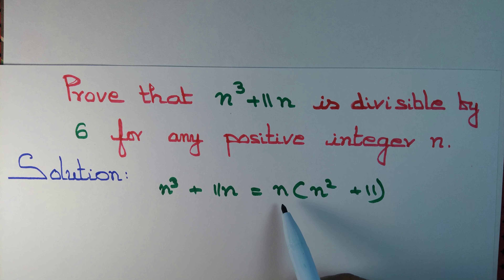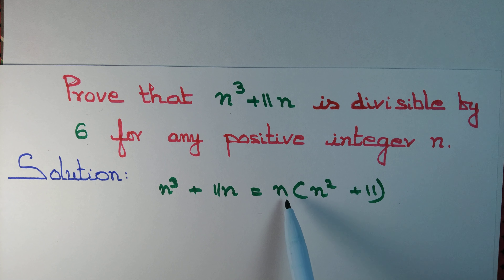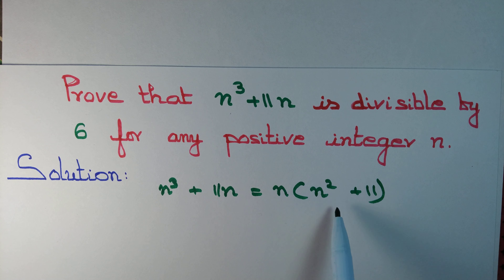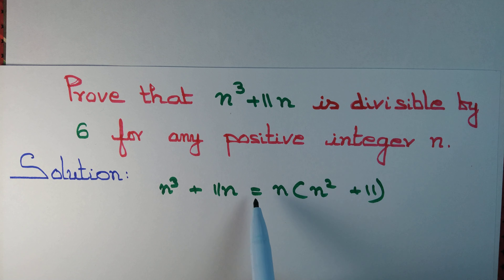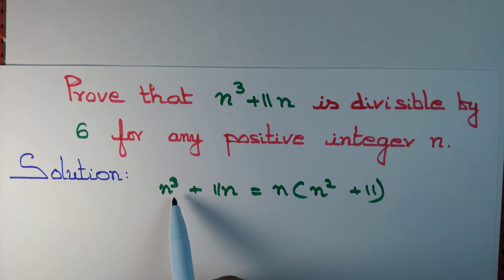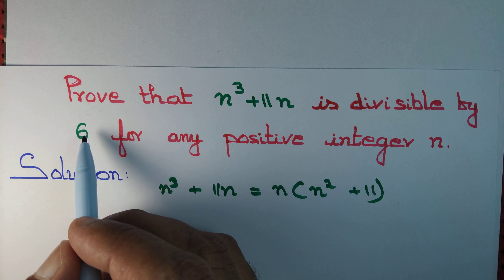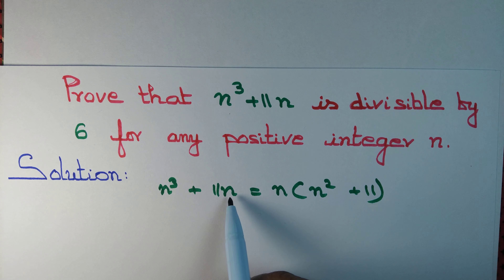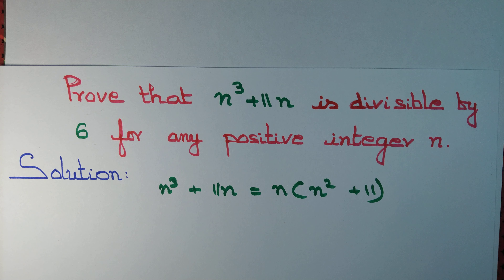If n is even, then this quantity is even. If n is a multiple of 3, then this quantity is again a multiple of 3. So it is a multiple of both 2 and 3 if n is a multiple of both 2 and 3 — meaning n³ + 11n is a multiple of 6 if n is a multiple of 6. But we need to handle all cases, so let's do it case by case.